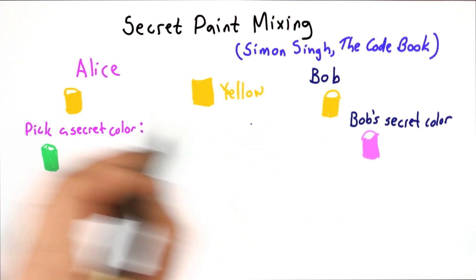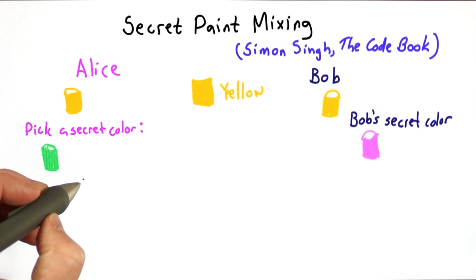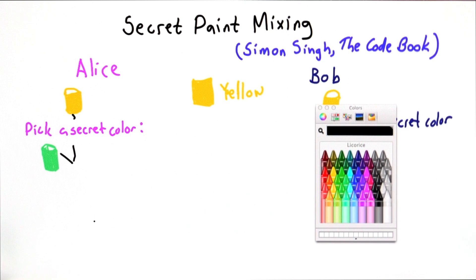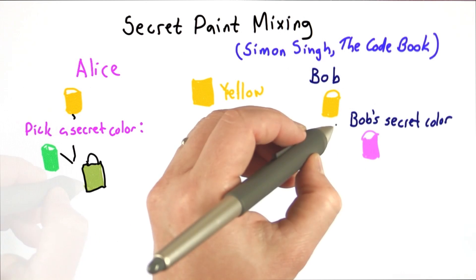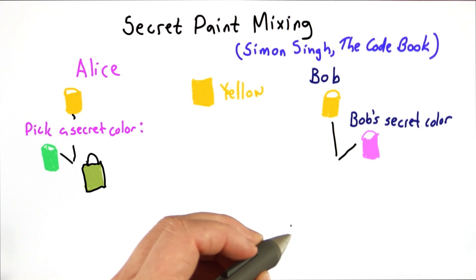Then what they do is mix their secret colors with the public color. So they're going to mix those two, and the green and yellow will make some ugly green color. Bob will do the same thing, mixing the yellow and purple to get some new ugly color.